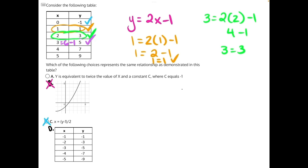3 times 2 will give us 6 minus 1 will give us 5. 4 times 2 will give us 8 minus 1 will give us 7. And 5 times 2 is 10 minus 1 will give us 9. So all of these points are matching this equation, making answer choice A our correct answer.